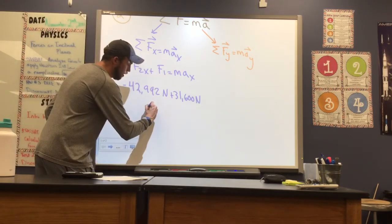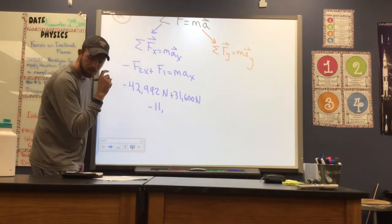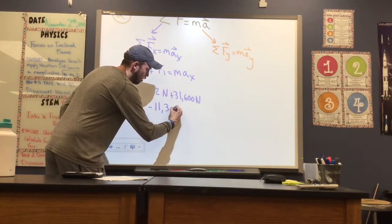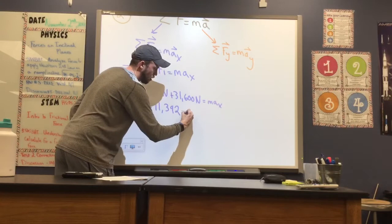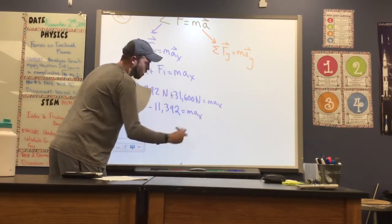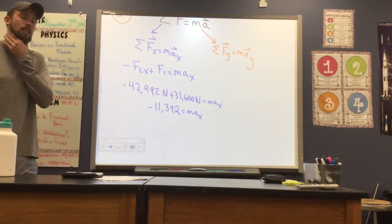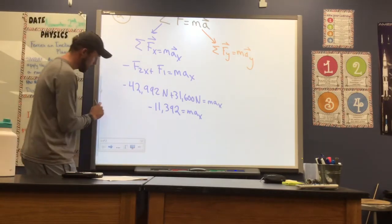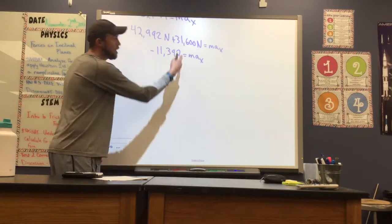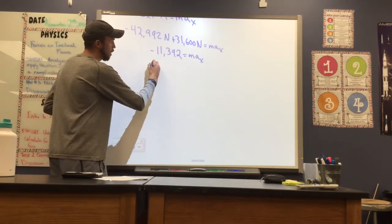And together, those are going to give me negative 11,392. And don't forget, that's equal to our mass times our acceleration. Now, as our problem statement was asking, we're looking for acceleration here. So to get acceleration, I know my mass, thankfully, so I'm just going to plug that in to find acceleration in the X direction.